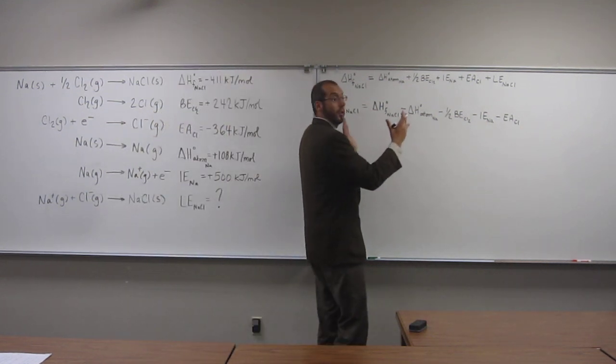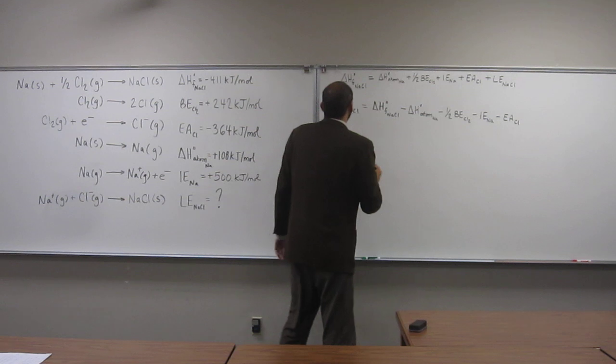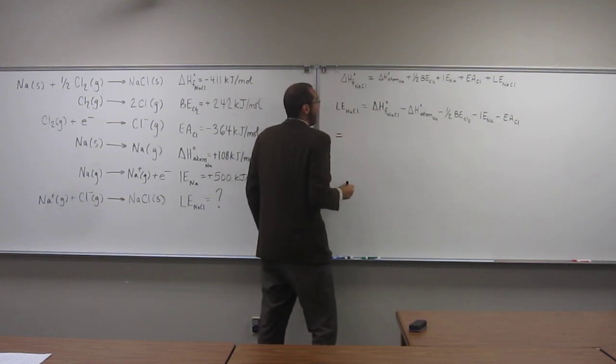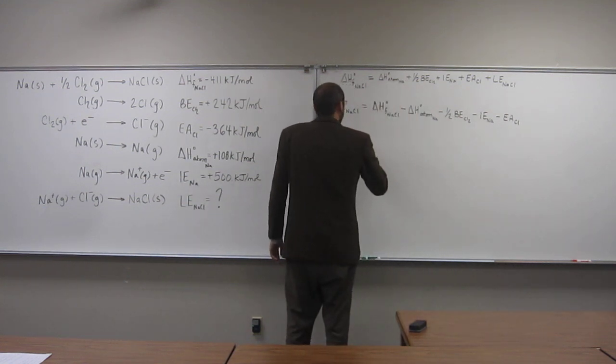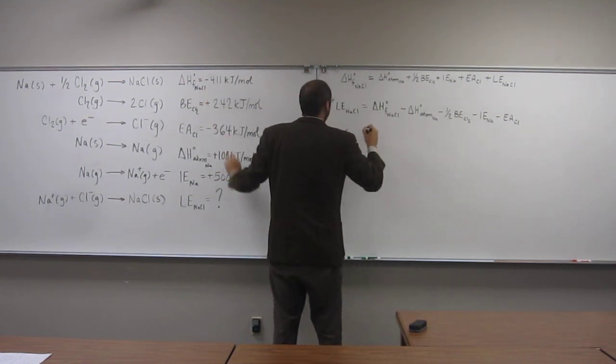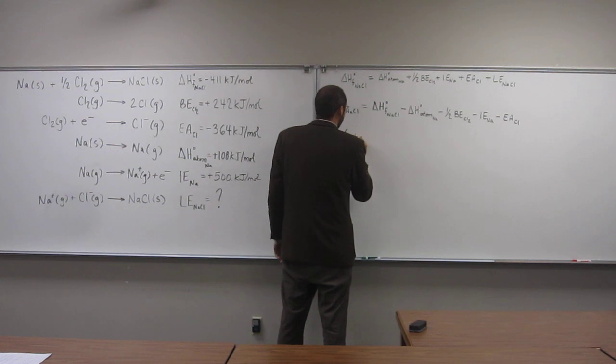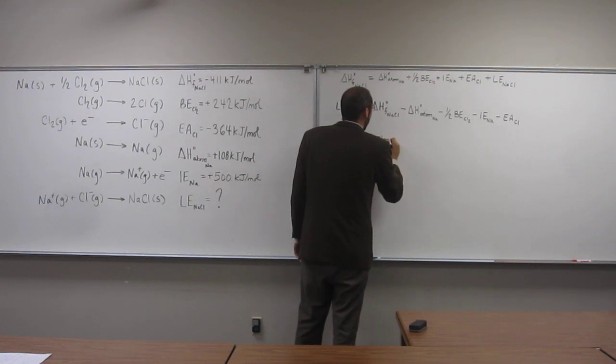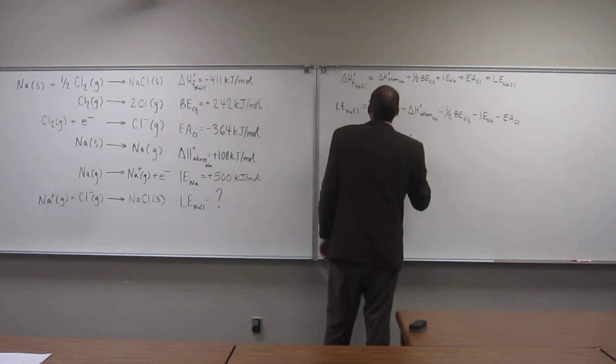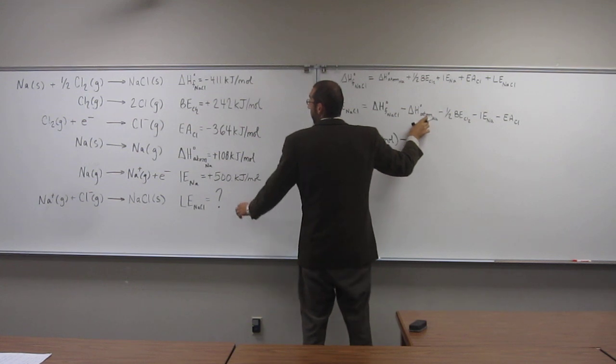So, now, it's just a plug-and-chug problem. So, let's put all of these values in. So, heat of formation, negative 411 kilojoules per mole, minus the atomization energy,